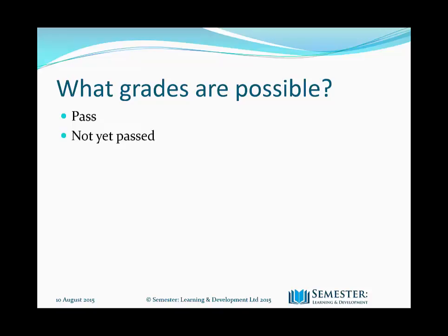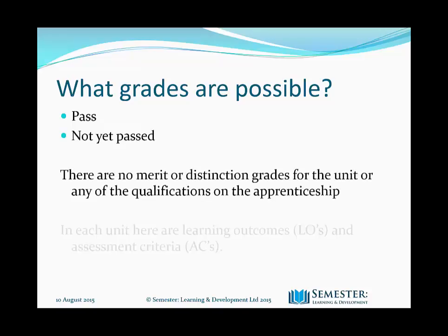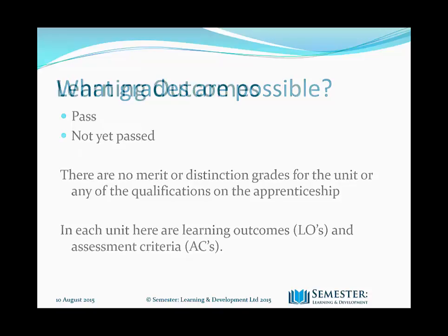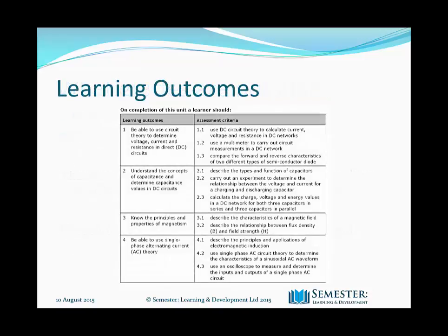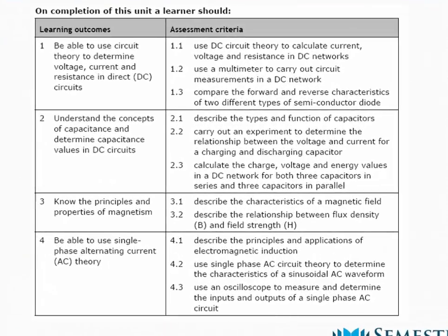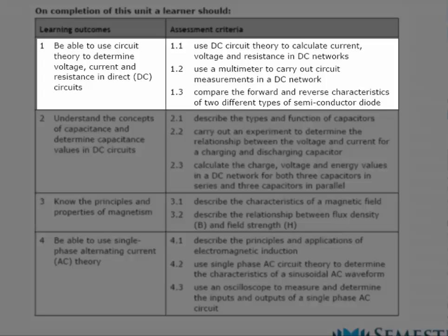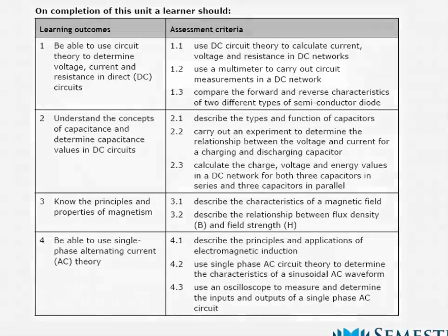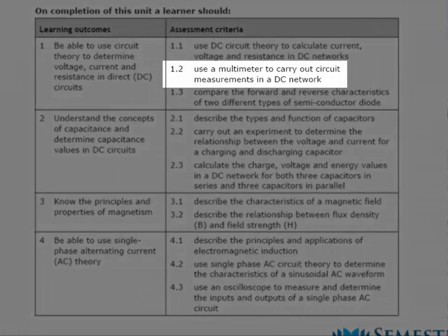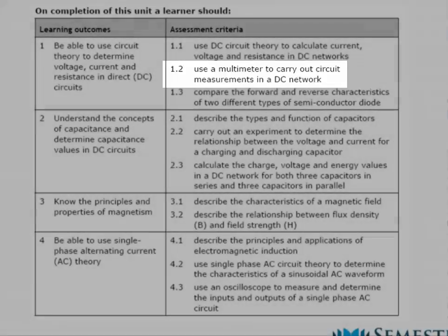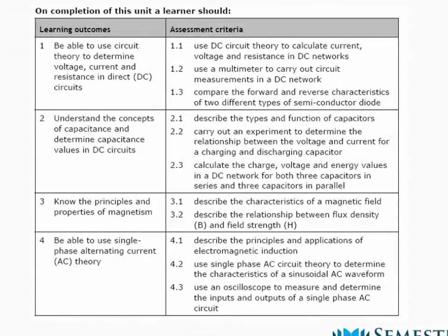In each unit, there are learning outcomes (LOs) and assessment criteria (ACs). In this unit, there are four learning outcomes, a summary of which are on the screen. However, this translates into three assignments. Each learning outcome has a number of assessment criteria, numbered with the learning outcome first, then the sub-criteria — so learning outcome one, criteria two reads 1.2, and so on. This is the same for every unit on the apprenticeship. The pass mark is 100%; however, there are no tests.